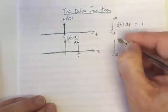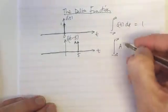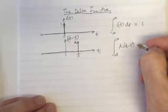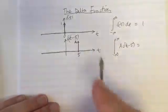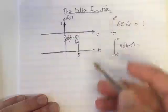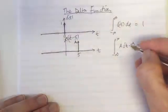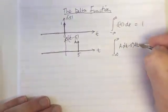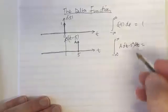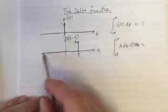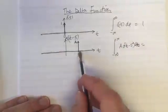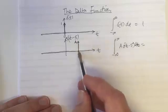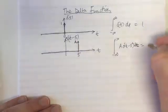What if we added up the area of this function — a times delta(t − 5)? The constant a comes out of the integral, and then we're just adding up zero everywhere from negative infinity to infinity, except at one place where the area equals one. So it's one times a, which is a.